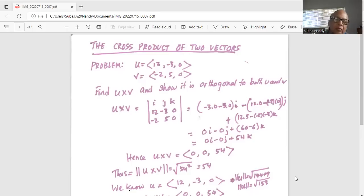To find the components of i, we eliminate the first row, first column, so we are left with minus 3, 0, and 5, 0, which is minus 3 times 0 minus 5 times 0. So basically it's 0.